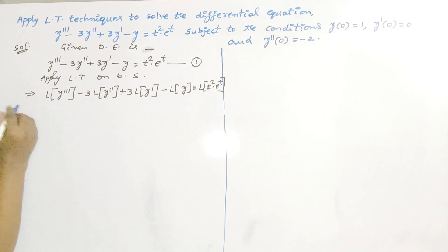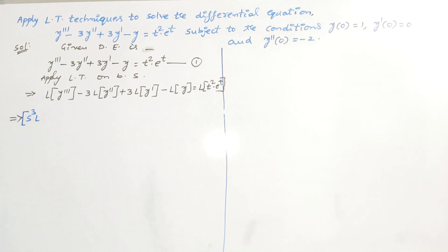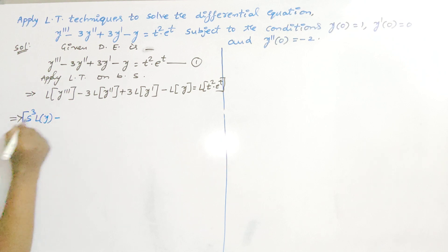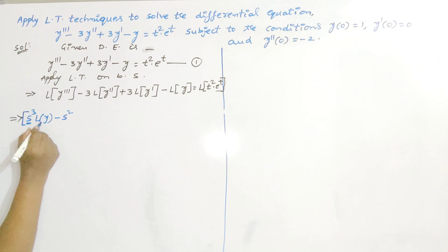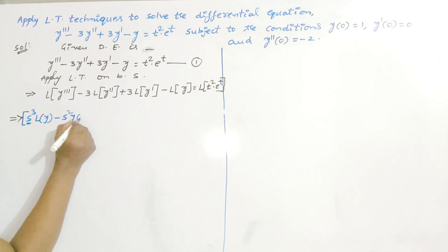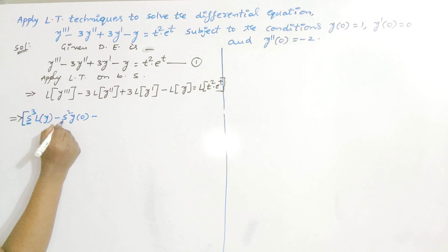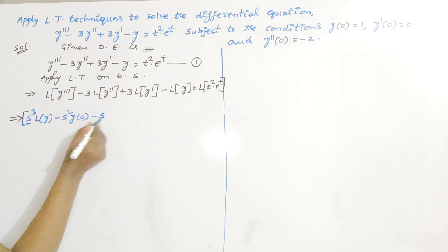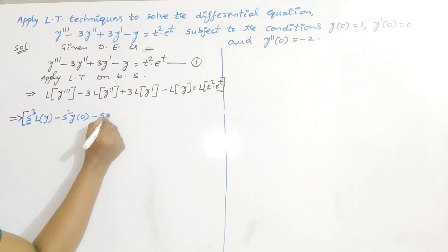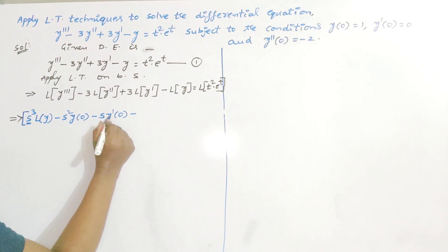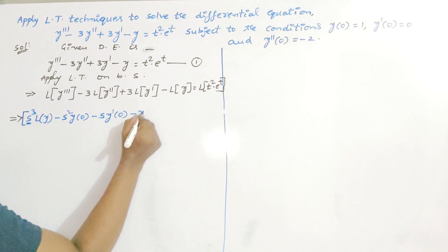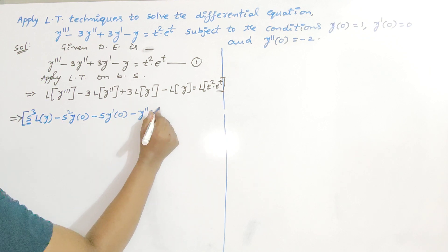What is L{y'''}? The formula starts with S cubed: S³ × L{y} minus S² × y(0) — decreasing the degree of S — minus S × y'(0) — decreasing the degree again — minus y''(0), where S to the power 0 is 1. So the next term after y'(0) is y''(0).